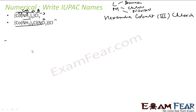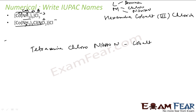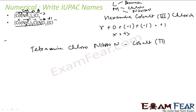So let's start with amine. Four amines will be tetra-amine. Done with amine. Then single chlorine: chloro or chlorido. Then NO2 is nitrito-N. Then cobalt — cobalt's charge: x + 0 + (−1) + (−1) = +1 overall, so cobalt comes out to be plus 3. The anion part is chlorine, so I write chlorido.